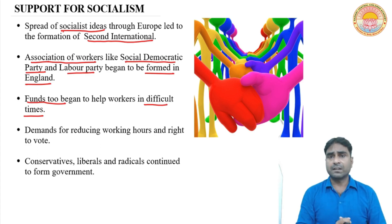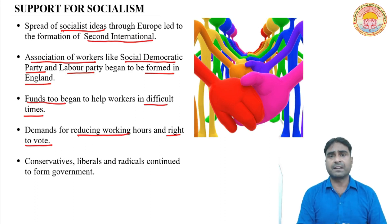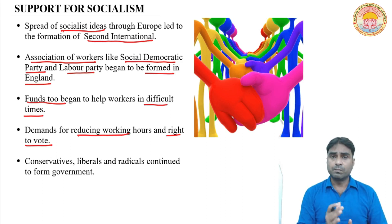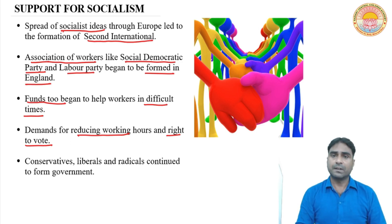The workers' unions were demanding to reduce working hours and the right to vote. The trade unions and workers' unions were forcing and demanding reduction in working hours and an increase in wages. Because at that time, working hours were very long — almost 15 hours — which made the condition of workers quite bad. So they were demanding that working hours be reduced and wages be increased.